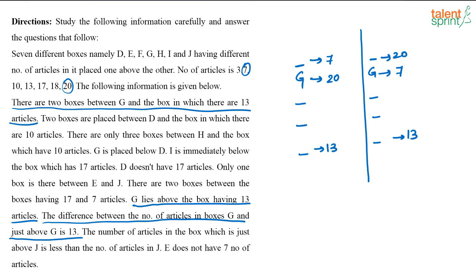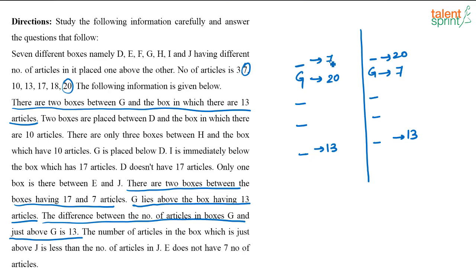Another clue: there are two boxes between the boxes having 17 and 7 articles. In Case 1, if 7 is at position 1 (top), with two boxes below it, then 17 must be at position 3. If we assume the remaining boxes are all above, 17 cannot be placed there — so 17 must come below 7 with exactly two boxes in between.